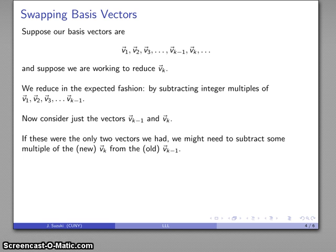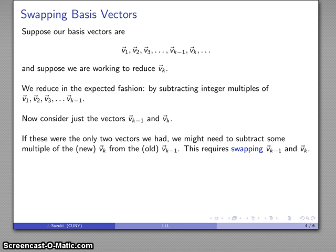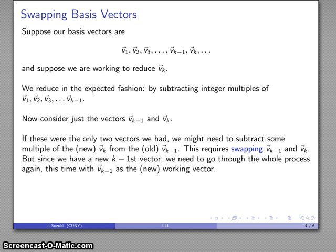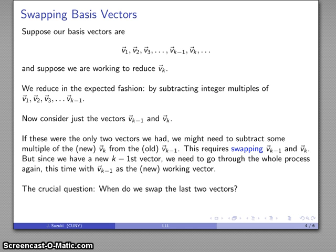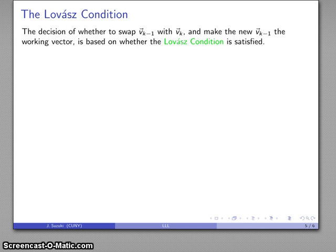If there were only two vectors, we might need to subtract some multiple of the new v_k from the old v_{k-1} — that's our Gaussian reduction. This requires swapping v_{k-1} and v_k. Since we have a new v_{k-1} vector after swapping, we then need to go through the entire process once again, this time trying to reduce v_{k-1} as our new working vector. The crucial question is: when do we want to swap those last two vectors? That's where the Lovász condition comes in.